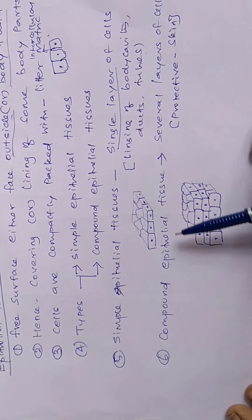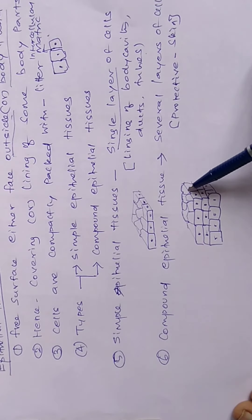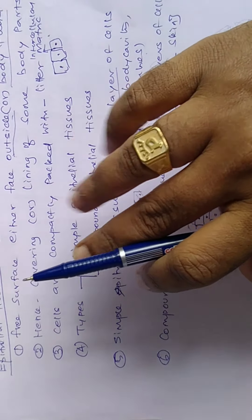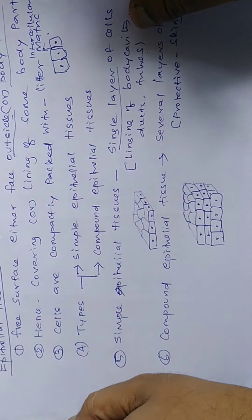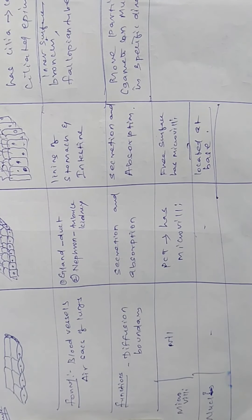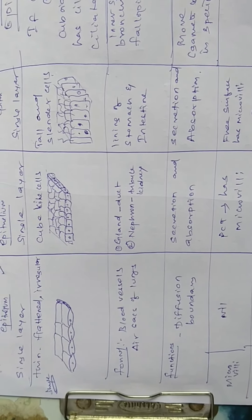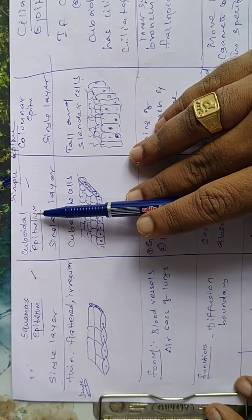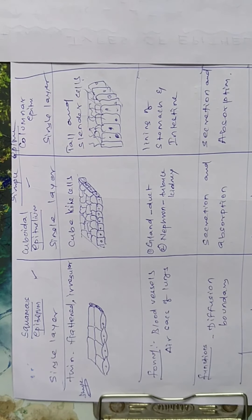The compound epithelial tissue has several layers arranged one above another, so it is protective in function, present on the skin. For example, our skin has many layers of epithelial tissues. Now the much more important part — the tricks to know the various types of simple epithelial tissue. Generally the simple epithelial tissues are three types: squamous epithelium, cuboidal epithelium, and columnar epithelium.